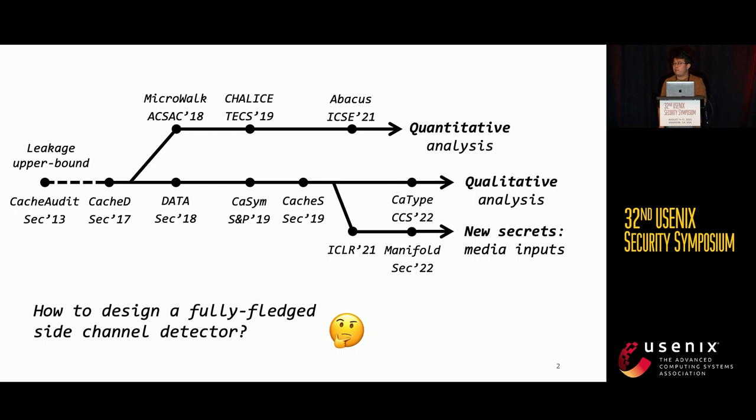In the past 10 years, many tools have been designed to detect cache side-channel leakage. For example, CacheAudit measures the upper bound of a side-channel leakage, which means it can prove a program is side-channel free. The majority of these works check if a program has side-channel leakage during its execution and localize the vulnerable program point.